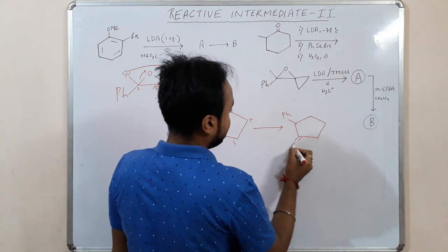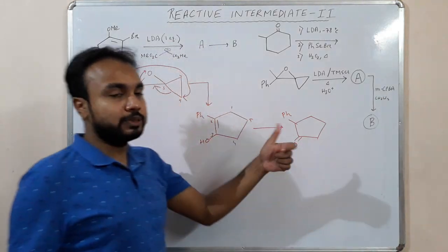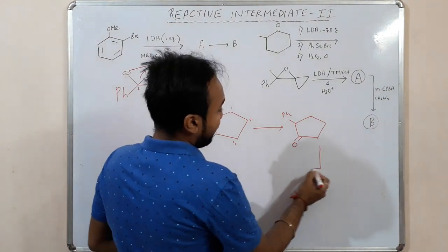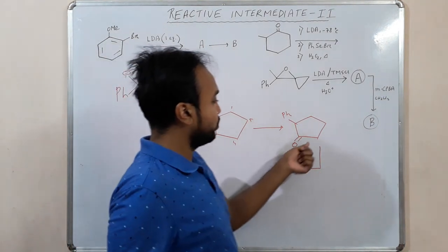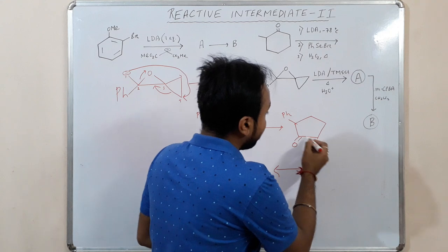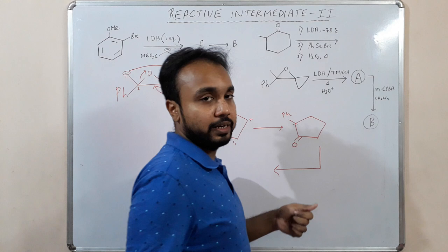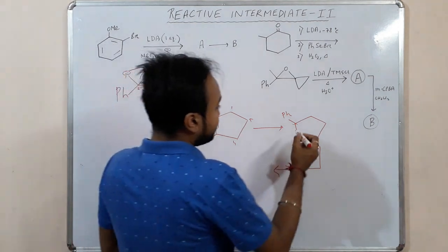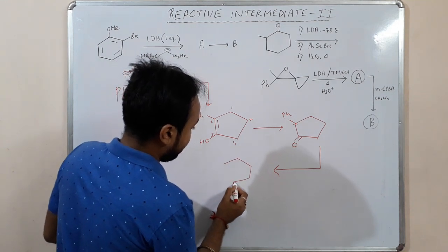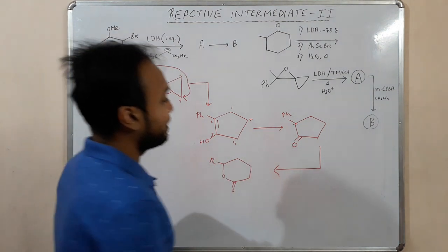Now mCPBA is given, so it will undergo Baeyer-Villiger oxidation. There are two groups that can migrate: one is tertiary and one is secondary. The tertiary group migrates preferentially, so oxygen is inserted into that bond, converting the ketone to a lactone product.